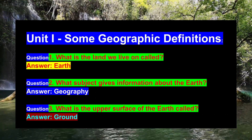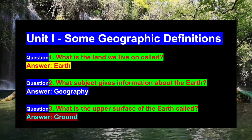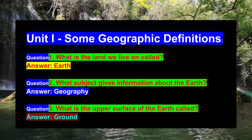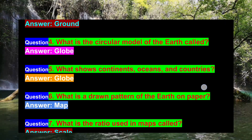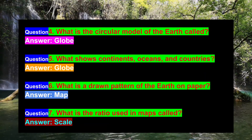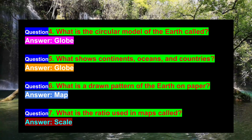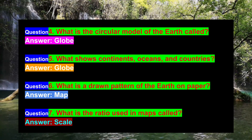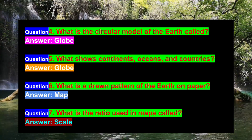Question 3: What is the upper surface of the Earth called? Answer: Ground. Question 4: What is the circular model of the Earth called? Answer: Globe.